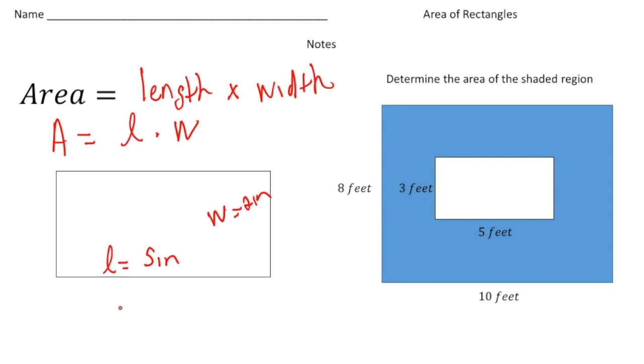Well, to find the area we have to do 5 times 2. So I'm going to write down A equals L times W, and I'm going to substitute for the L, the 5, and I'm going to substitute for the W, the 2. And 5 times 2 gives us 10.